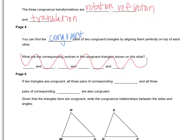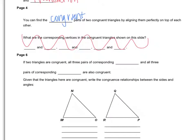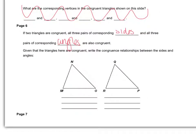If two triangles are congruent, then that means all three pairs of corresponding sides and all three pairs of corresponding angles are also congruent. So given that the triangles here are congruent, write the congruence relationships between the sides and angles.